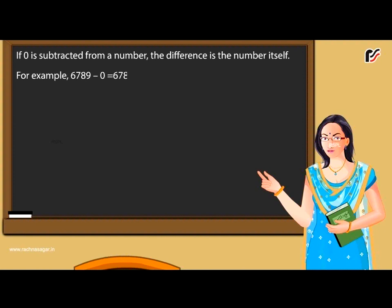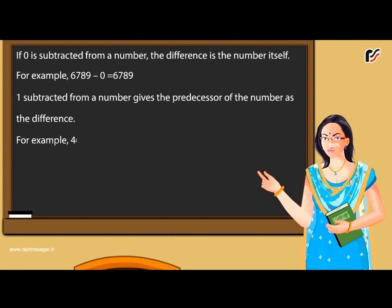If 1 is subtracted from a number, it gives the predecessor of the number as the difference. For example, 4698 minus 1 equals 4697. A number subtracted from itself gives 0 as the difference. For example, 4583 minus 4583 equals 0.